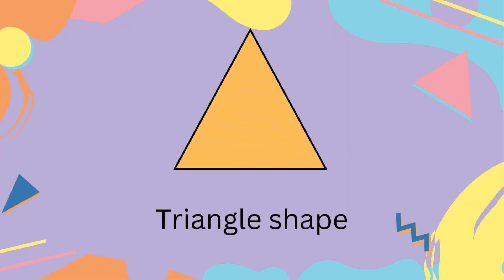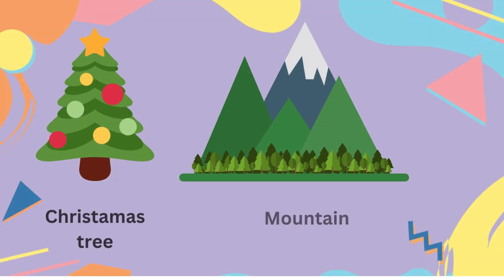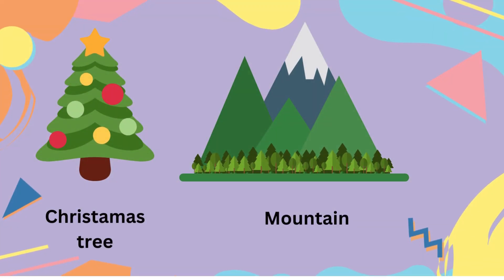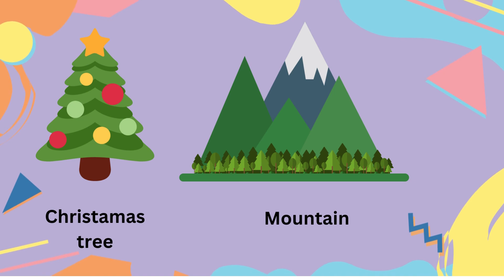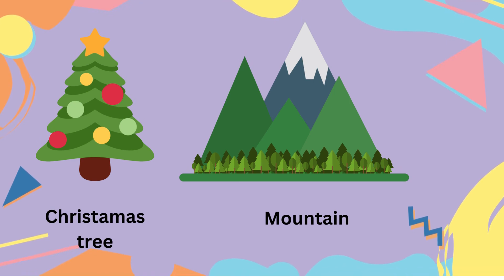It is a triangle shape. Examples of a triangle shape are a Christmas tree and mountains.